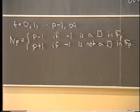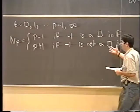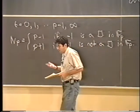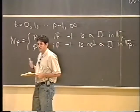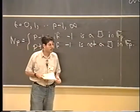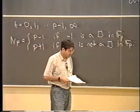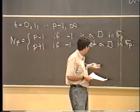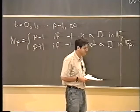So you find that N_p equals p−1 if −1 is a square in the finite field with p elements, and equals p+1 if −1 is not a square in 𝔽_p. That's an explicit formula for the number of solutions mod p. However, the condition of whether −1 is a square mod p seems a bit subtle — if you give me a 10-digit prime, you don't really know a priori.